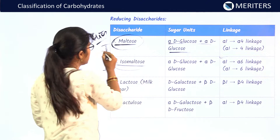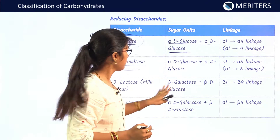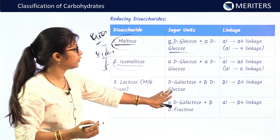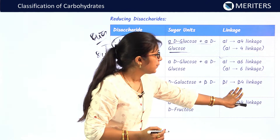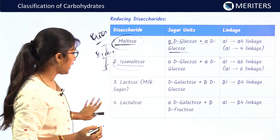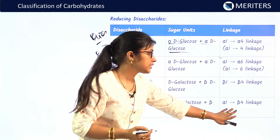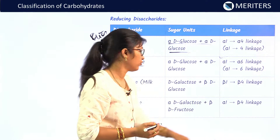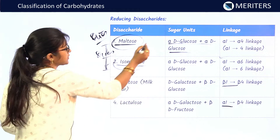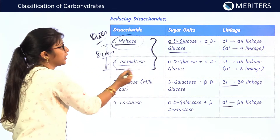Lactose, also called milk sugar, has sugar units D-galactose and beta-D-glucose with a beta-1,4 linkage. Lactulose has alpha-D-galactose and beta-D-fructose with an alpha-1 to beta-4 linkage. In these cases, the same sugar units may appear but different linkages make different disaccharides — so these linkages are very important exam points.